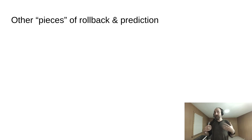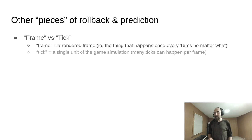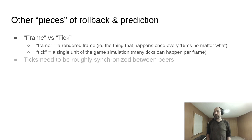There's a few other pieces of rollback and prediction that are important. First, I'd like to make a distinction between a frame and a tick. I'm going to try to use frame to mean a rendered frame—the thing that needs to happen every 16 milliseconds to keep a stable 60 frames per second—and tick to mean a single unit of the game simulation. The reason we make this distinction is because many ticks can happen within the time span of a single frame. That's what happens every time we do a rollback.